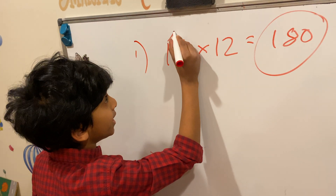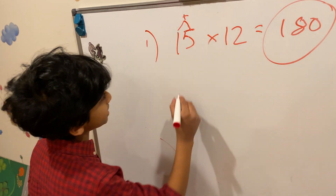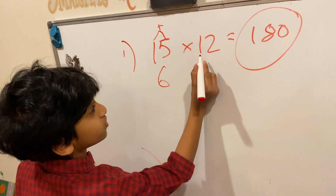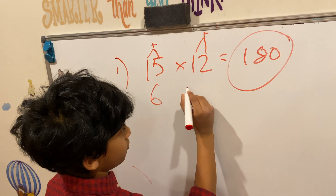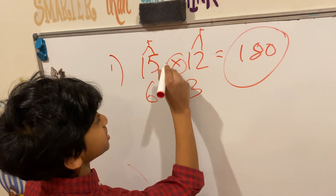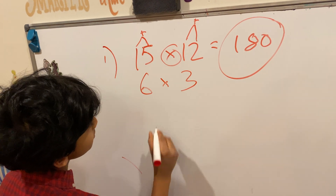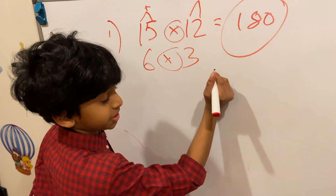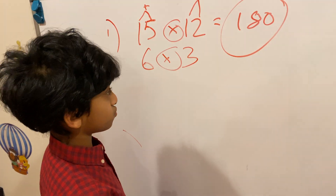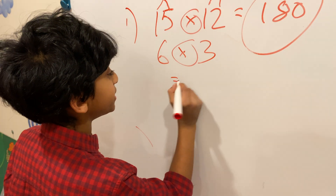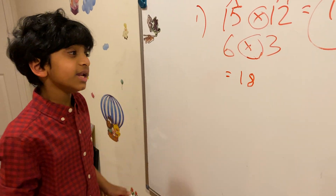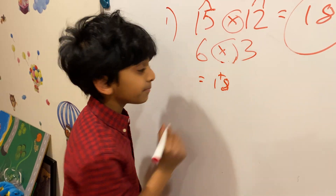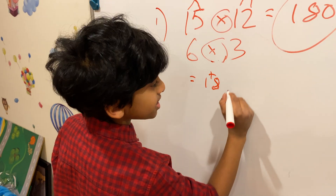So first we do 1 plus 5 which is 6. Next we do 1 plus 2 which is 3. And then since the operation is multiplication, we do the same operation here, which is 6 times 3. So 6 times 3 is 18. But we now have to make it a single digit number, so we do 1 plus 8.